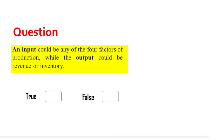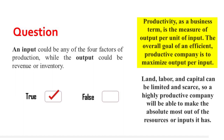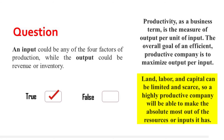An input could be any of the four factors of production, while the output could be revenue or industry — true or false? If you said true, then that is correct. Productivity as a business term is the measure of output per unit of input. The overall goal of an efficient, productive company is to maximize output for input. Land, labor, and capital can be limited and scarce, so a highly productive company will be able to make the absolute most out of the resources or input it has.